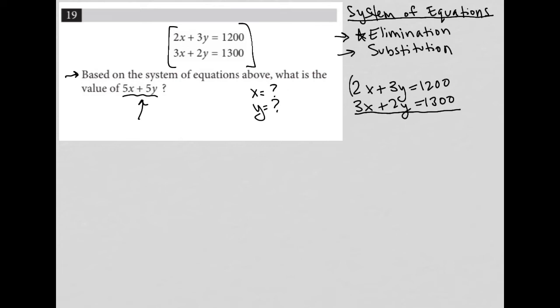If I multiply this top equation by 3 and this bottom equation by negative 2, then the result would allow me to eliminate my x values.